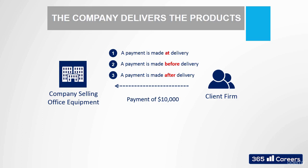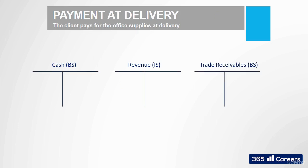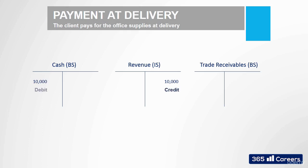Let's use T-accounts to understand the impact that each of these cases has on the company's accounts. We will need three T-accounts: cash, revenue, and trade receivables. We have three possible scenarios: the client pays at the time of delivery, before the time of delivery, and after the time of delivery. In the first case, things are quite simple — the company earns revenues for ten thousand and receives a payment of ten thousand in cash. We credit revenues for ten thousand and debit cash for the same amount.